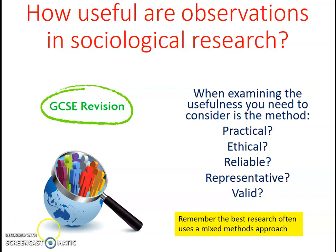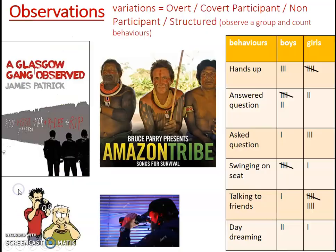Let's have a look at the different variations of observations. There is covert, overt, participant, non-participant, and structured. I will talk to you about those variations.